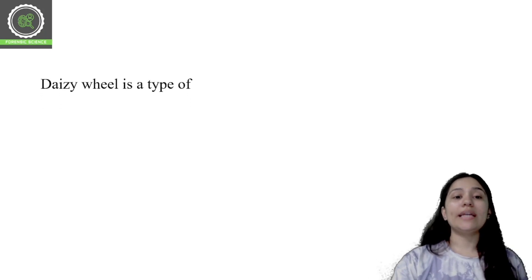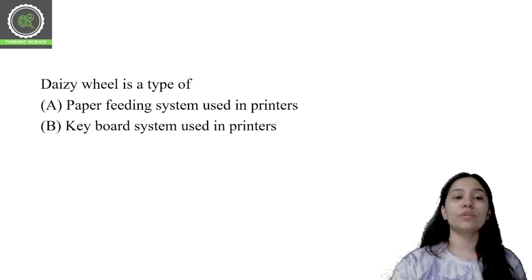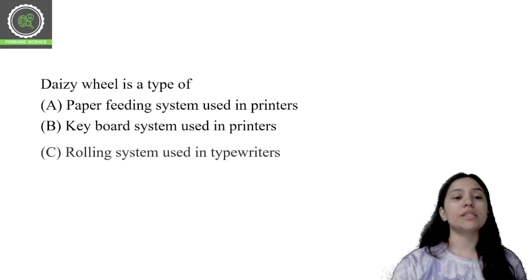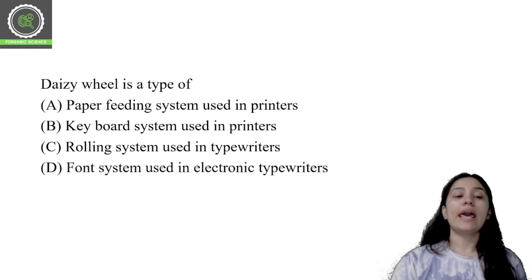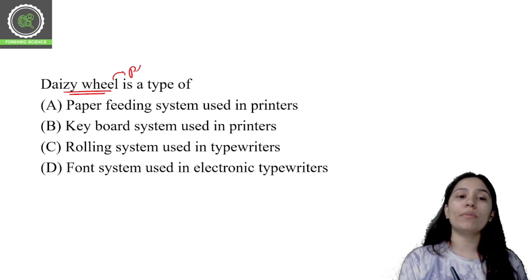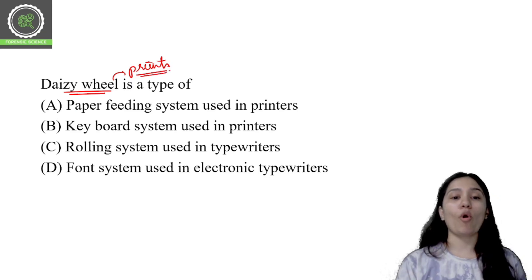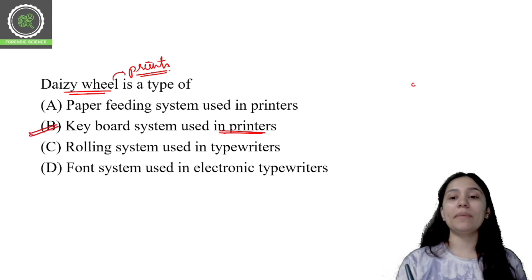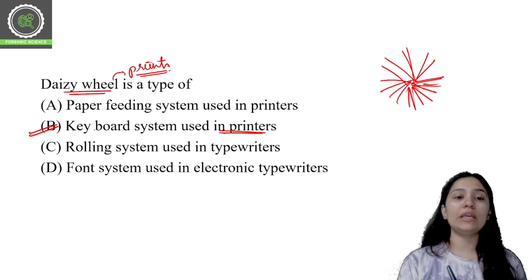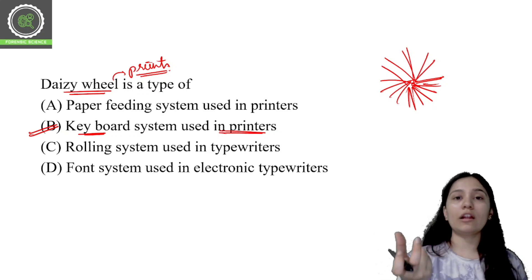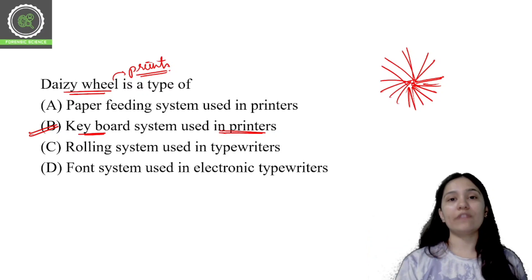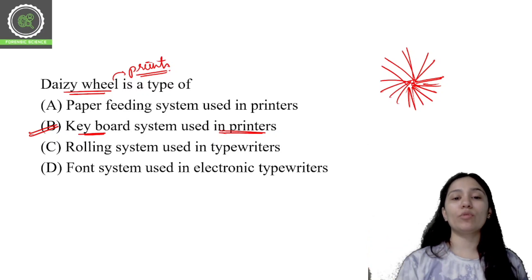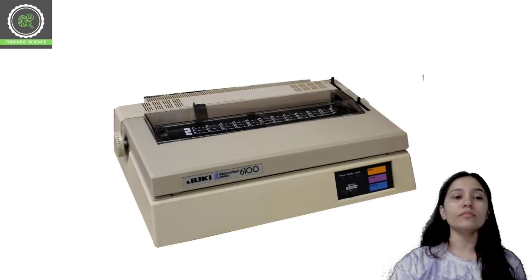Next question: Daisy wheel is — a paper feeding system used in printers, a keyboard system used in printers, a rolling system used in typewriters, or a font system used in electronic typewriters. The correct answer is that Daisy wheel is a type of keyboard system used in printers. It uses metal alphabets (type elements) mounted on a wheel, functioning as the keyboard printing mechanism of the printer.